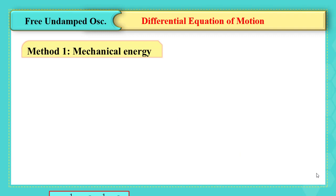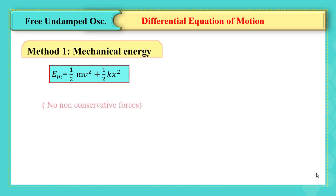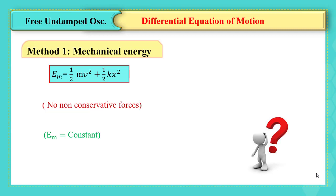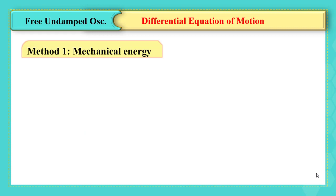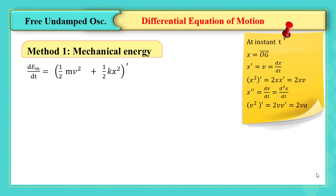As the oscillations are made without any non-conservative forces, the mechanical energy of the system is conserved. We need to make a derivative to get to the differential equation. We can differentiate the mechanical energy expression, which equals zero since mechanical energy is constant. To make the derivative, we should remember that the derivative of x² is 2xv, and that of v² is 2va, since x and v are functions of time.